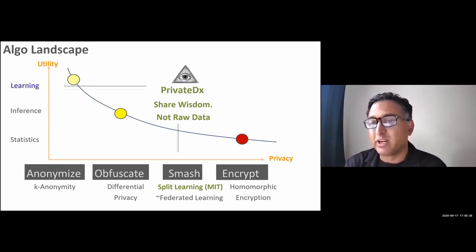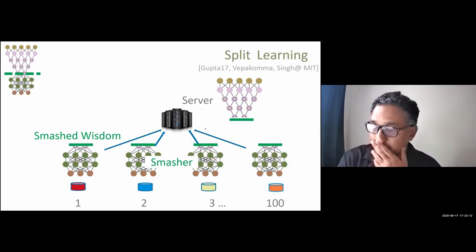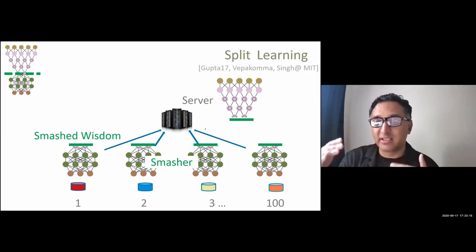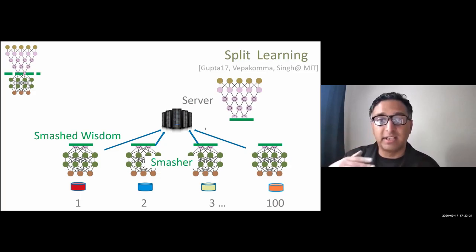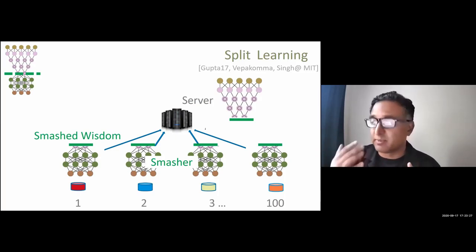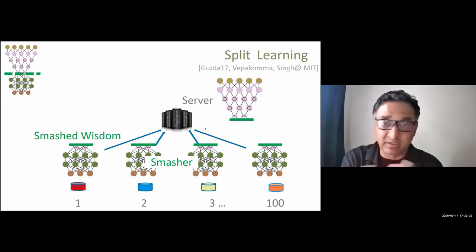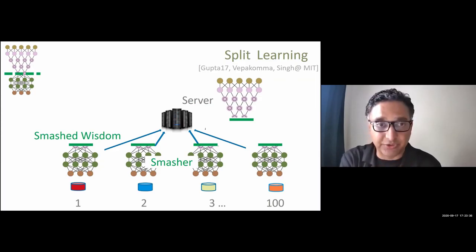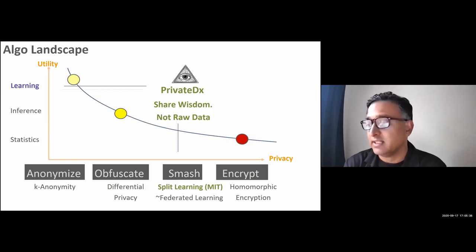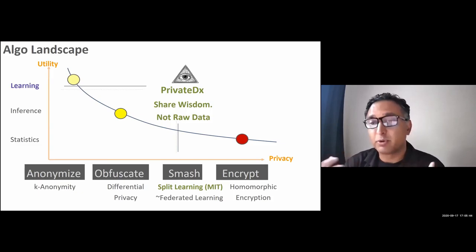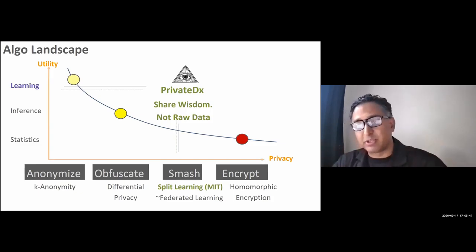Two techniques have emerged in recent years: federated learning and split learning, which is from our group at MIT. In split learning, you take a neural network and split it — the early part executes at the client and the later part executes at the server. The early part is called the smasher, and it converts your data point into a smashed representation. The rest of the process is similar to traditional DNN supervised learning. The basic idea behind both techniques is to share wisdom but not raw data — from smartphones, for instance, you only want the wisdom, not personally identifiable raw data.